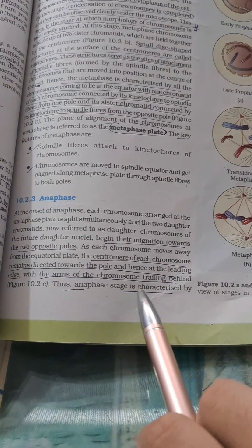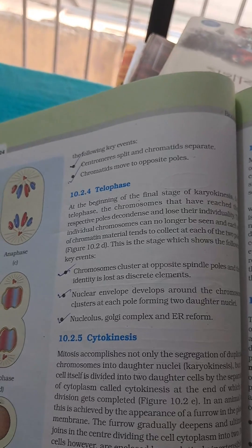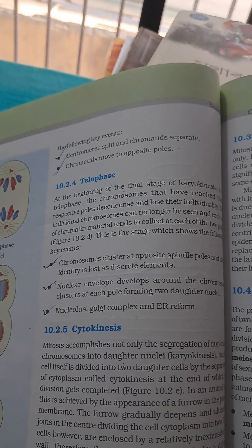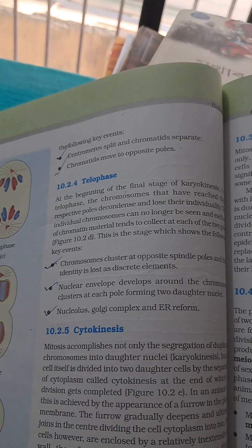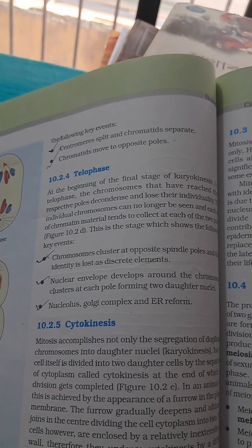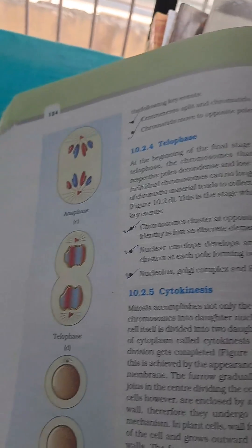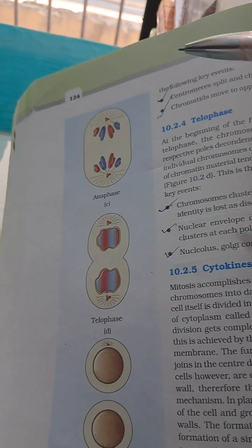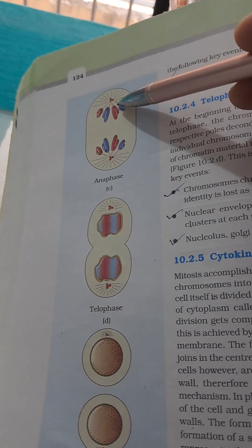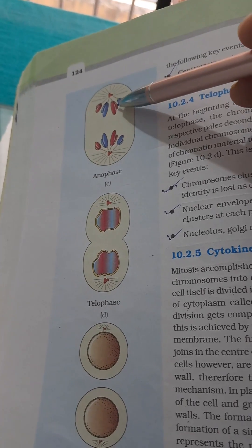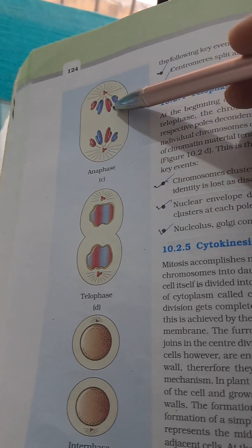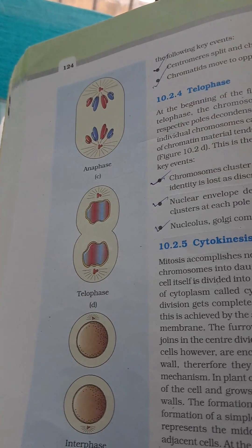Anaphase is characterized by the key events: centromere splits and chromatids separate; chromatids move to the opposite pole. These points are very important from an MCQ point of view. In the diagram of anaphase, the centromere is the leading edge and the arms trail behind — remember this diagram as well for your MCQ.